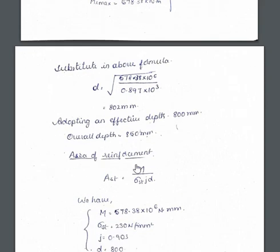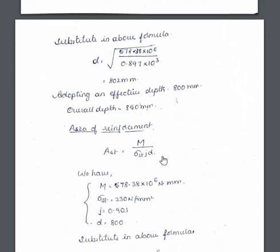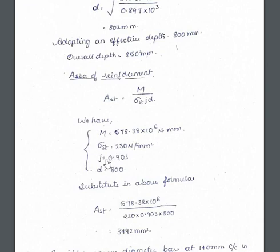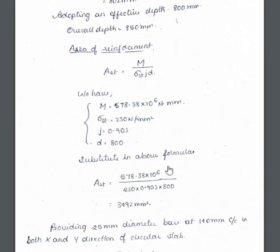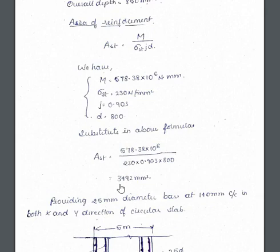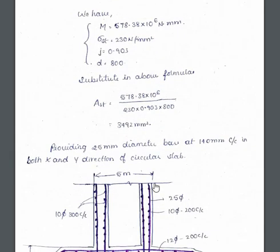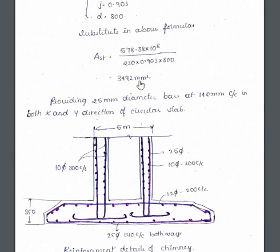The area of reinforcement is: Ast = M / (σ_st × j × d), where j is a constant and σ_st = 230 N/mm². M is the maximum moment calculated, and d is the effective depth of 800 mm. Substituting all values gives Ast = 3492 mm².